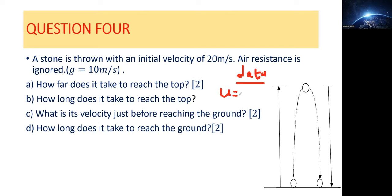What we've been given: initial velocity is equal to 20 meters per second, air resistance is ignored, and g is equal to 10 — that's the pull of gravity. Then they're asking how far does it take to reach the top.